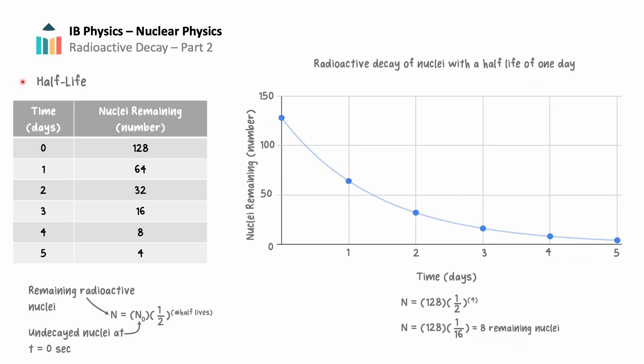In Radioactive Decay Part 1, we looked at the half-life of radioactive nuclei — the amount of time that it takes half of the radionuclei in a sample to decay. We derived the equation n equals n-sub-zero times one-half to the power of the number of half-lives, and saw that the graph it produces is an exponential decay curve.